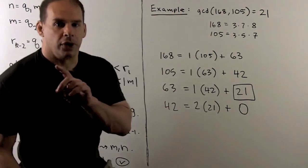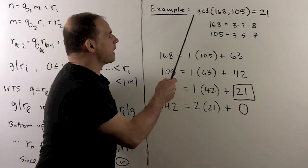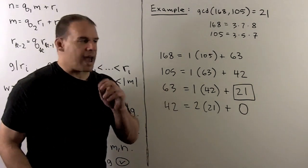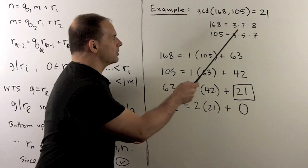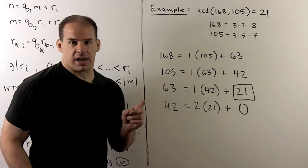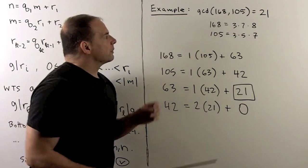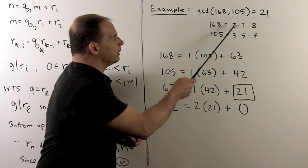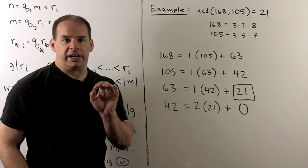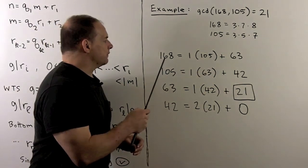Now, for an example, let's consider greatest common divisor of 168 and 105. We factor, 168 is 3 times 7 times 8. 105 is 3 times 5 times 7. So, considering the factors, greatest common divisor is going to be 21. Now, using the Euclidean algorithm, first division,